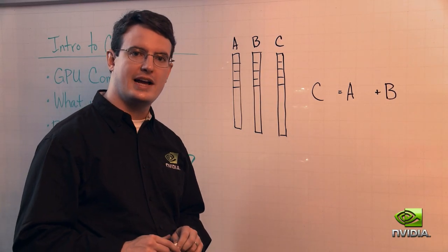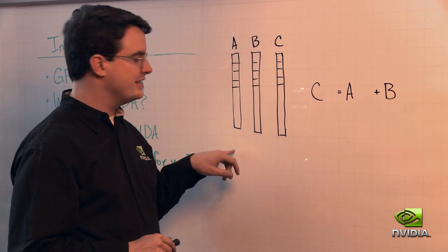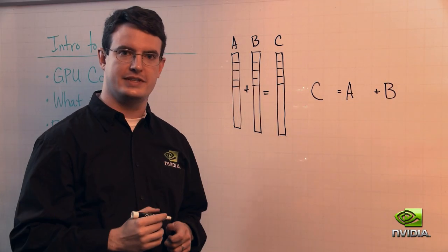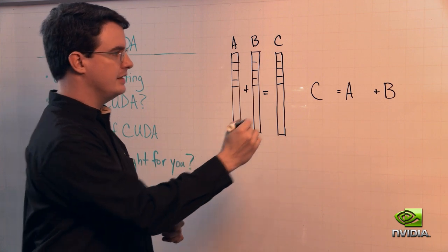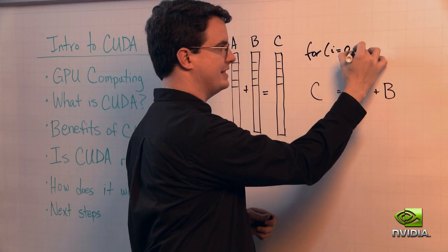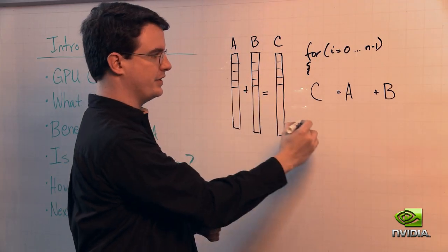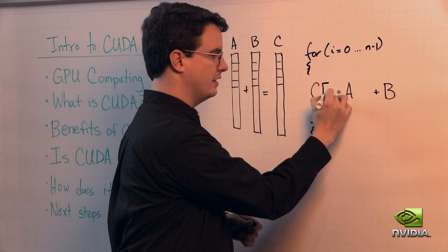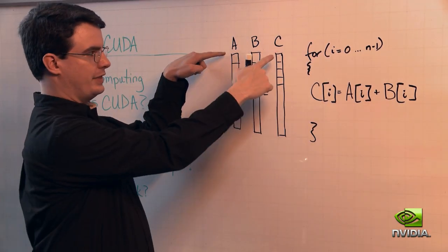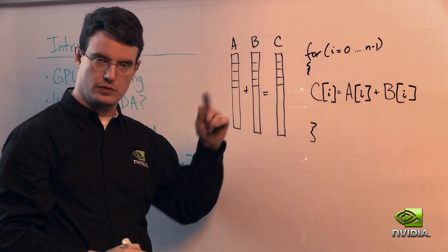Let's take a look at an example that shows how CUDA makes it easy to express parallelism. Consider a case where we have three vectors, A, B, and C, and we simply want to add vectors A and B and store the result into C. In C, in the sequential case, this would simply look like a loop that says: for i equals zero to n minus one, where n is the length of the vector. Then one element at a time, we add the zeroth element to the zeroth element, then the first, then the second, and so on — one at a time in series.